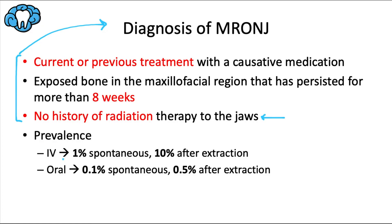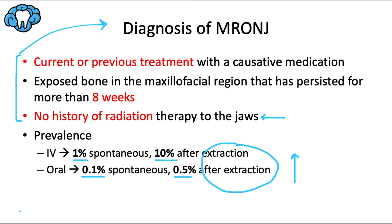As far as prevalence, we have a higher prevalence with IV bisphosphonates. The average case appears one year after administration, with 1% of MRONJ happening spontaneously — and that jumps to 10% following a tooth extraction. For oral bisphosphonates, the average case appears three years after administration, with only 0.1% spontaneous MRONJ, jumping to 0.5% after a tooth extraction. The risk is fairly low, with the highest being around 10%, but the unfortunate part is that the half-life of these drugs in bone can be up to 10 years.